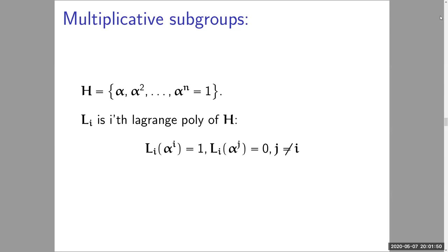If I have a multiplicative subgroup of this form, am I in a ring? You are in a field. And N is smaller than P — N is some divisor of P minus one. And this doesn't cause a problem with the multiset equality check as described before. When H is of this form, it's easy to do a multiset check.